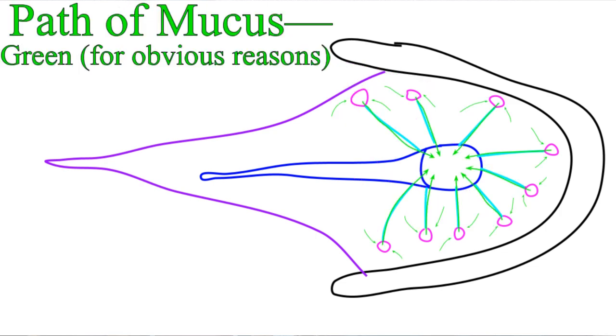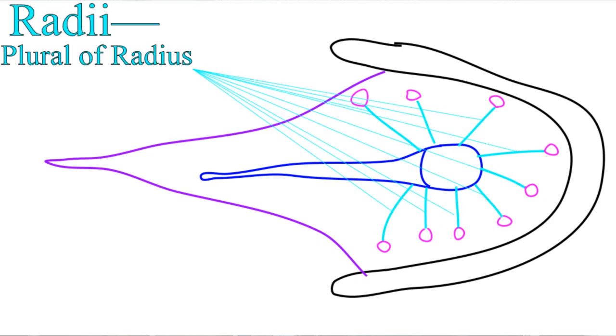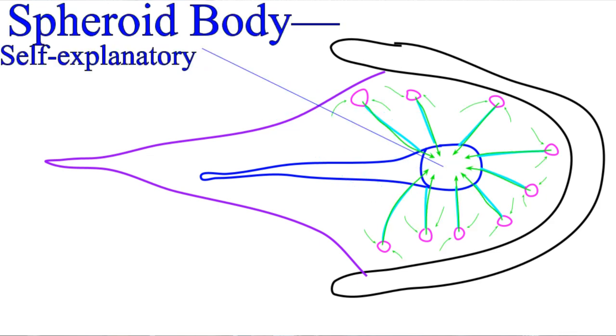When called for, they send their mucus down the radii, these little tubes, to the spheroid body. So-called because it's a body that's shaped like a sphere. This is the big container, and it's where things start to heat up.